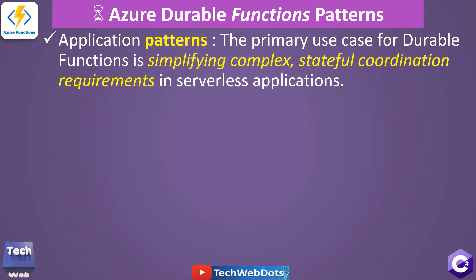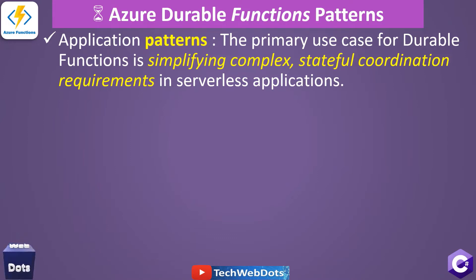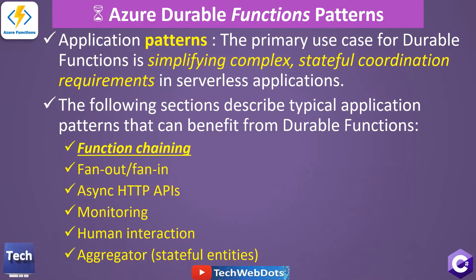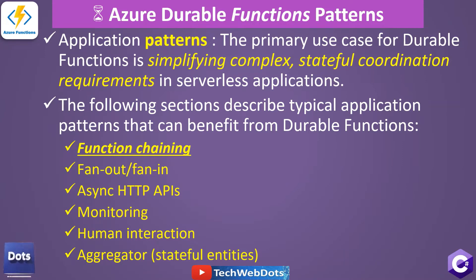Now let's talk about patterns - generally called application patterns. The primary use case for Durable Functions is simplifying complex and stateful coordination requirements in serverless applications. The following section describes typical application patterns that can benefit from Durable Functions. One of them is function chaining, which we will discuss today, and the remaining patterns we will discuss in upcoming videos.